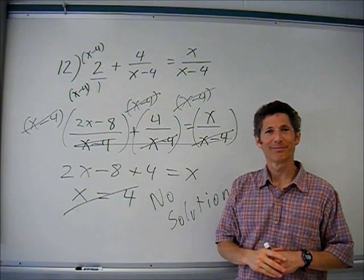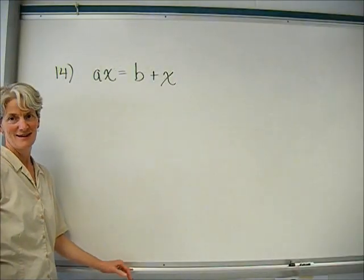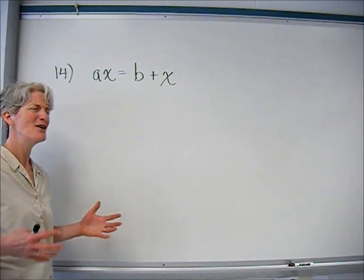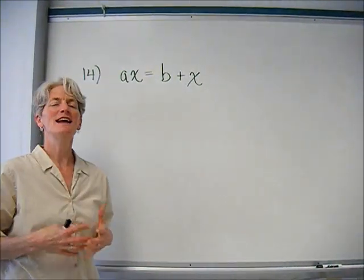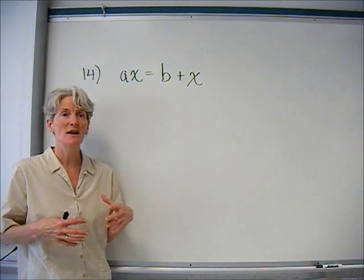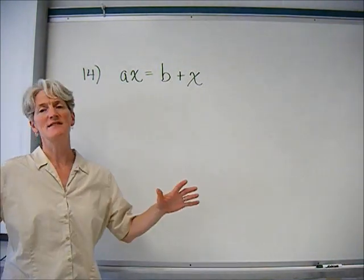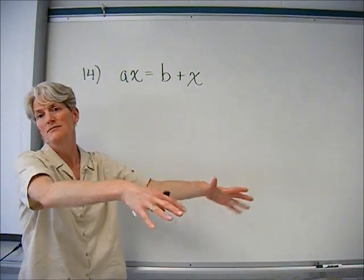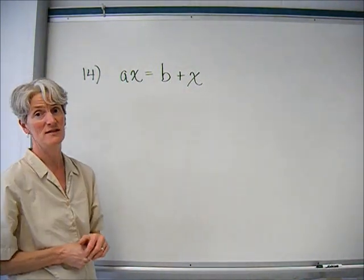This is always tricky when people say 'solve for x' but there are a's and b's in the equation. In a situation like this, when you're asked to solve for a variable and there are other variables, that just means getting x by itself with everything else on the other side — defining x in terms of a's and b's.